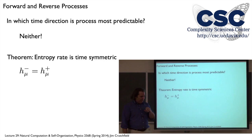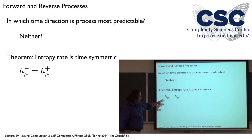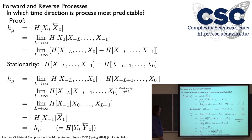We went through the derivation a couple weeks ago — pretty straightforward, mostly just an application of stationarity. We look at h-mu-plus: that's the uncertainty in the current symbol given the past. We write this out by conditioning on finite-length pasts and putting the limit out front to give well-defined quantities. This uncertainty in the next symbol given the past can be written as the two-point slope — the difference between two block entropies.